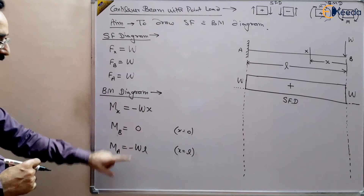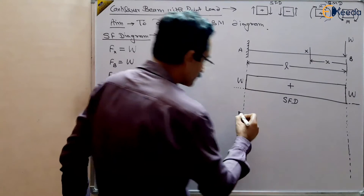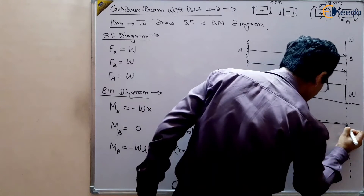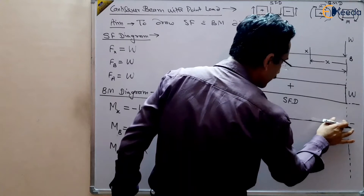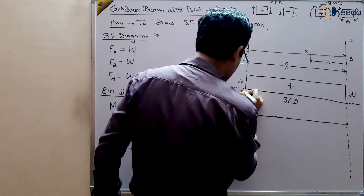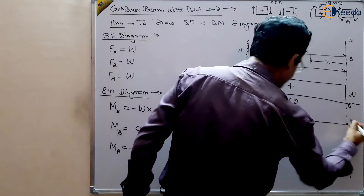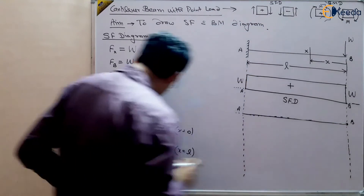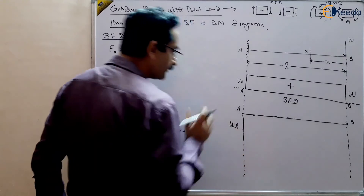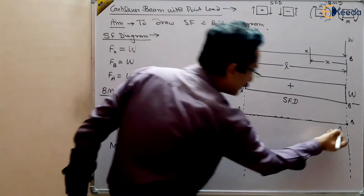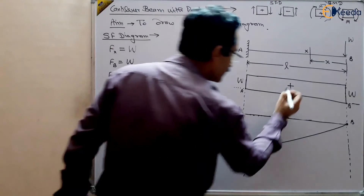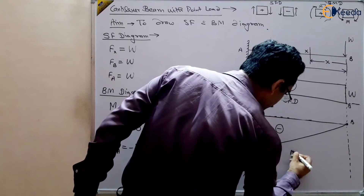From 0 to WL it is varying linearly, and it is in the negative direction. This is our baseline. The bending moment is 0 at point B and −WL at point A — this quantity WL on scale — and the variation is linear from 0 to WL. So this is our bending moment diagram. It is negative, going from 0 at B to −WL at A.